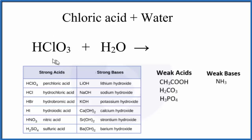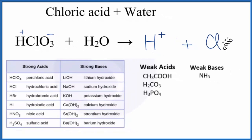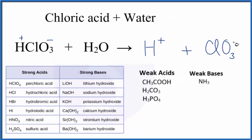Because it's a weak acid, it's not going to break apart completely — only some of it will break apart into its ions. The H in front is what makes it an acid, and only some of these hydrogen atoms are going to come off. Hydrogen has a 1 plus charge, and the chlorate ion has a 1 minus charge. So only some of these H pluses will break off, giving us H plus and ClO3 minus.